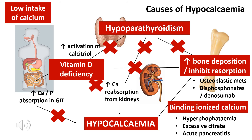Moving on to hypocalcemia. One obvious cause is low dietary intake of calcium. Another important cause is vitamin D deficiency, which can arise from multiple reasons. An important cause is hypoparathyroidism or lack of PTH, usually iatrogenically induced — the parathyroid gland can be damaged during thyroidectomy or with radioactive iodine treatment for Graves' disease. Other causes of hypoparathyroidism include congenital, autoimmune, or infiltrative processes like hemochromatosis or malignancy.